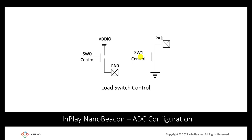Another important feature available with the IN100 is that we can configure it to turn off the power supply to the sensor when we're not using it. This means we can really dial down the power consumption of our device and achieve longer battery life. All of this is done with no programming via the NanoBeacon config tool.